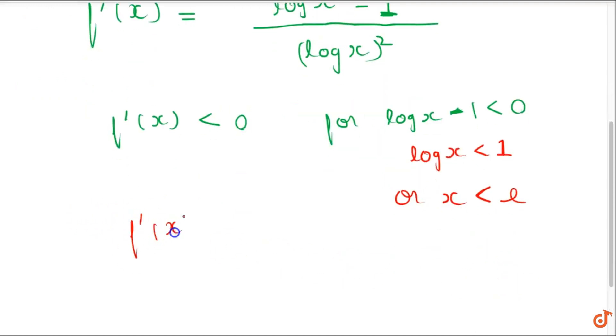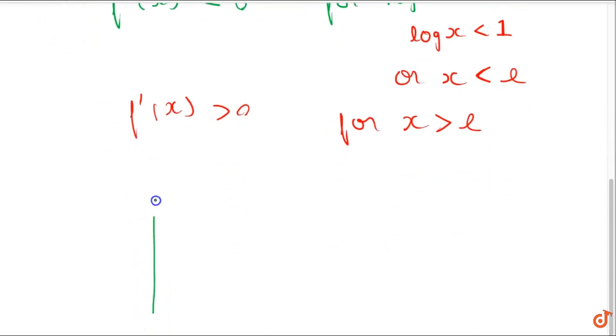And f dash x is greater than 0 for x greater than e. So if we try to draw the graph, we will say this is 1.